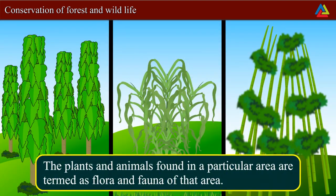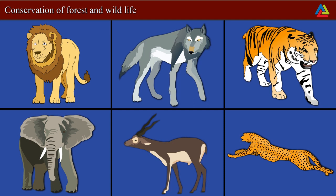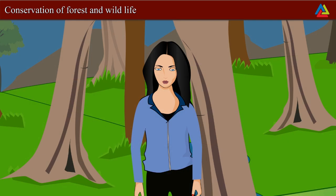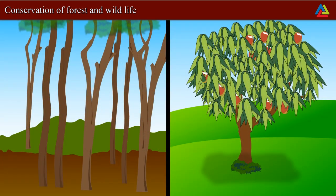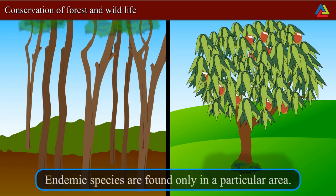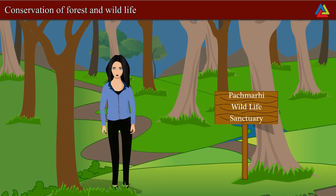The plants and animals found in a particular area are termed as the flora and fauna of that area. Endemic species are those species of plants and animals which are found exclusively in a particular area. Sal and wild mango are examples of endemic flora of the Pench Mowgli biosphere reserve. Indian giant squirrel and flying squirrel are endemic fauna of this area.